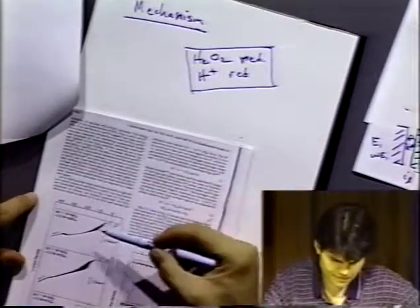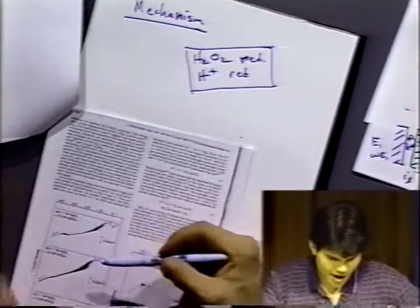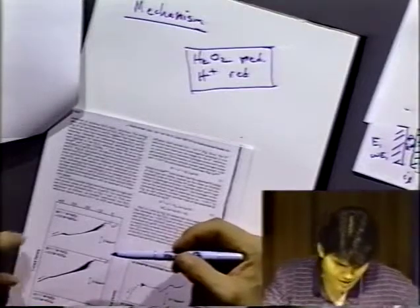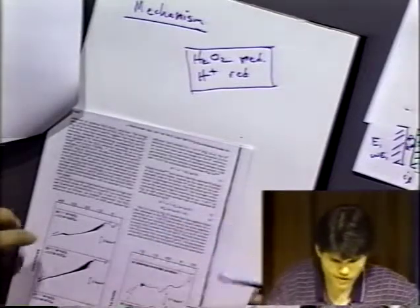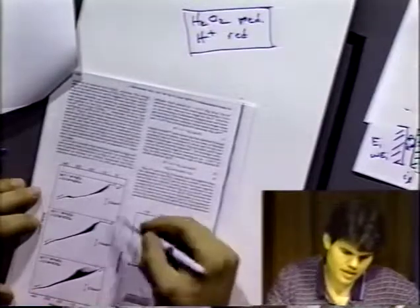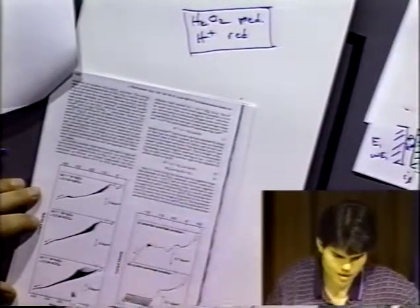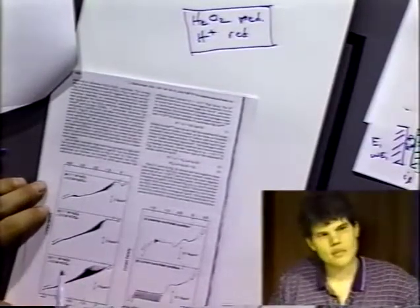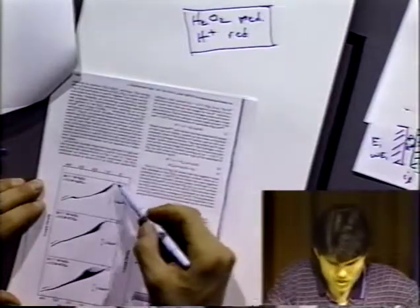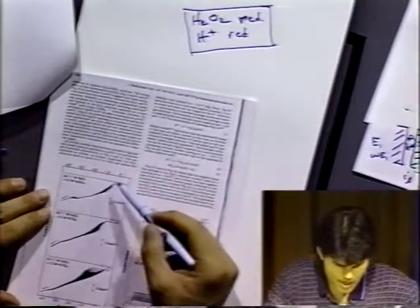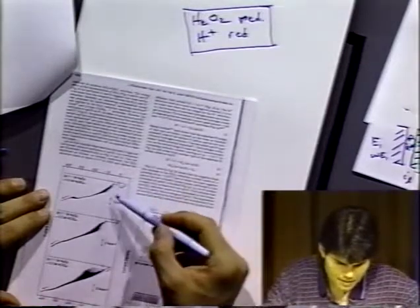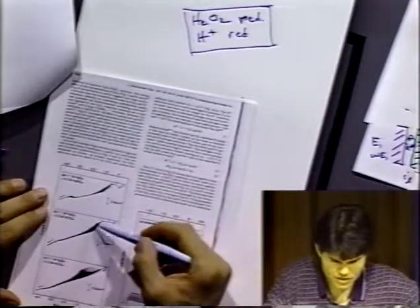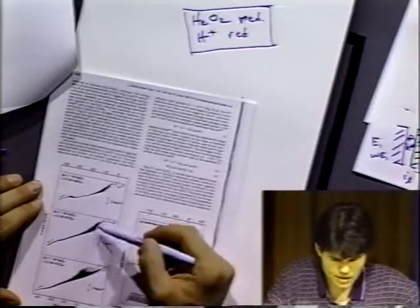Curve seven shows A and B — two different acids essentially — and C is the situation where we have a constant current mode of operation, while A and B are constant potentials. So you see an oscillation, and as you scan more negative to about minus one volt, you see oscillations in the potential or current increasing and decreasing.